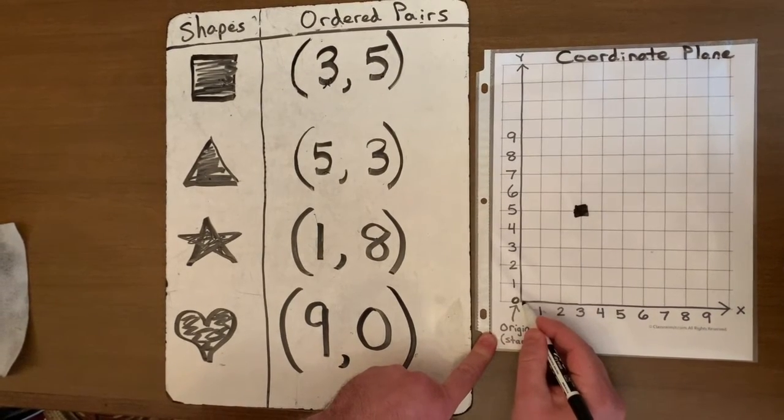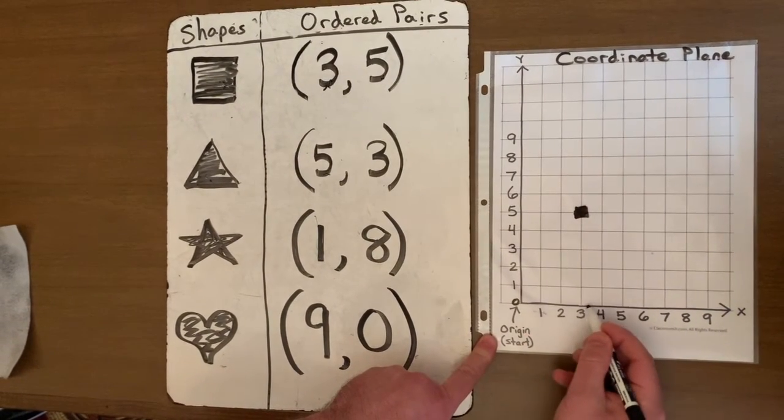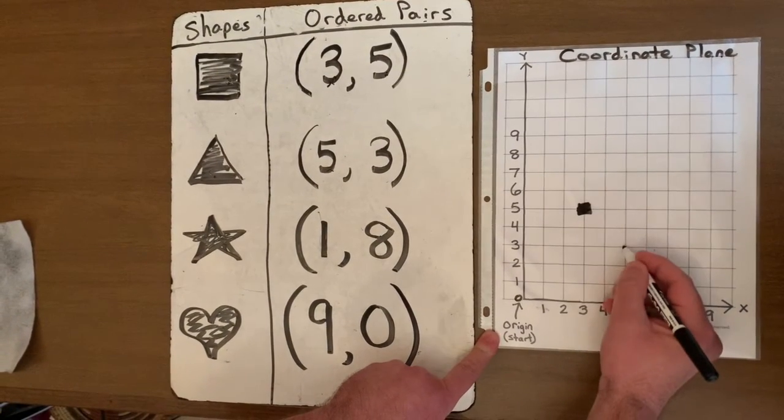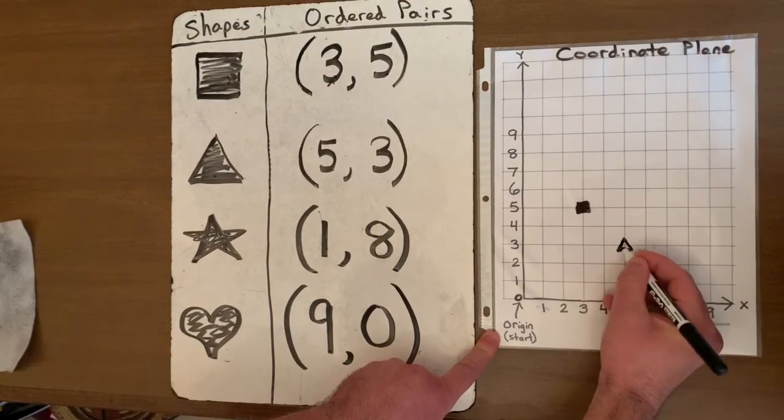So starting at my origin I'm going to go to the right five. One, two, three, four, five. And up three places. One, two, three. That's where I will mark my triangle.